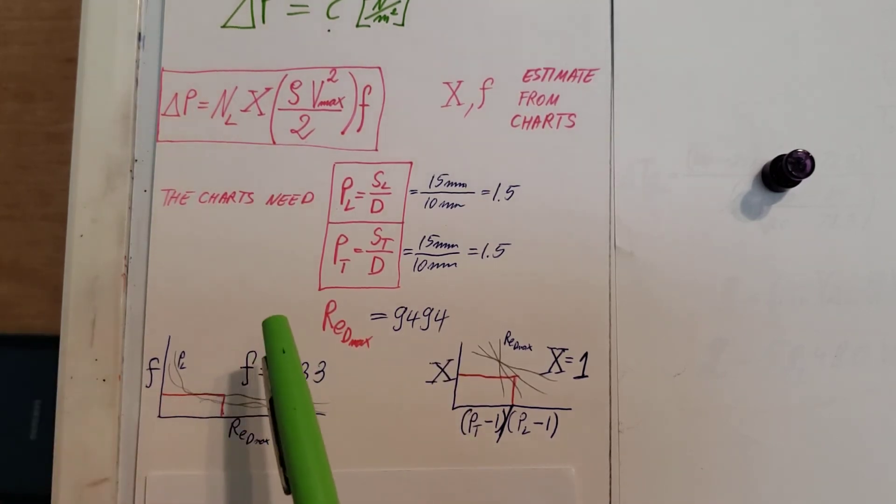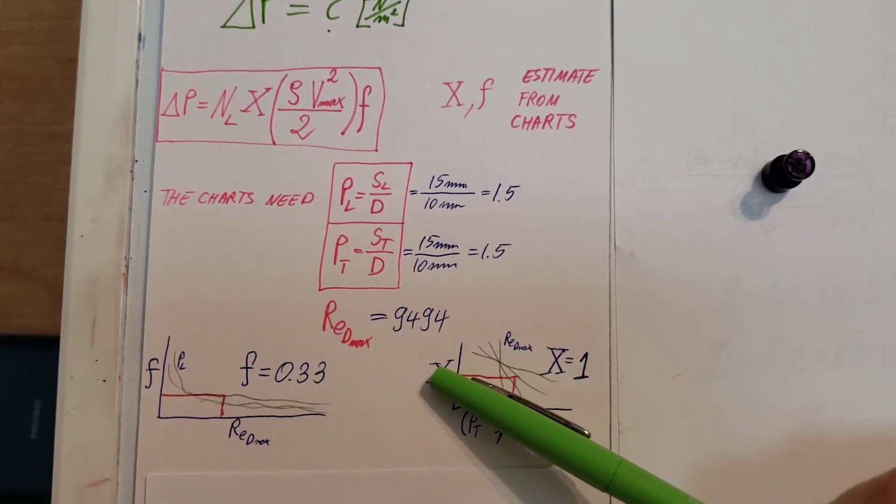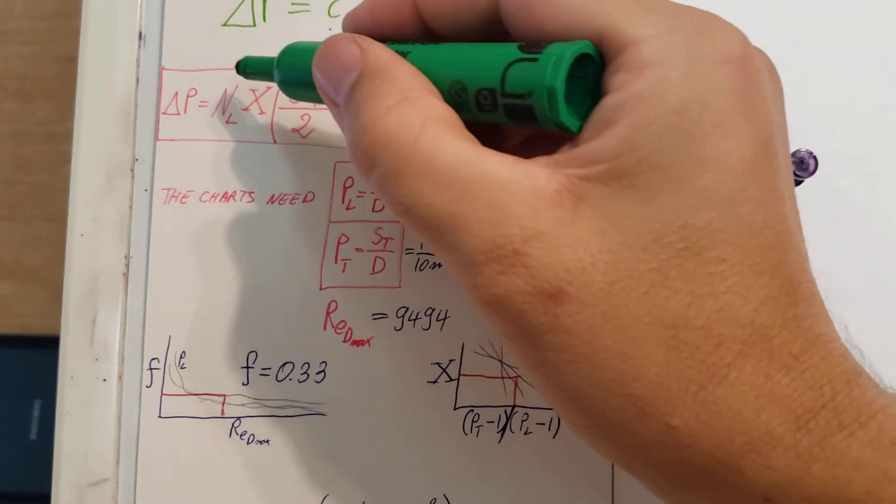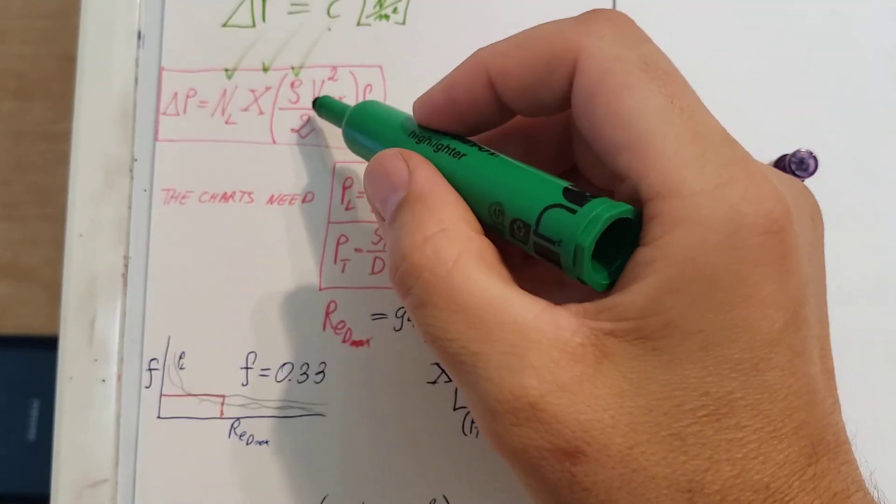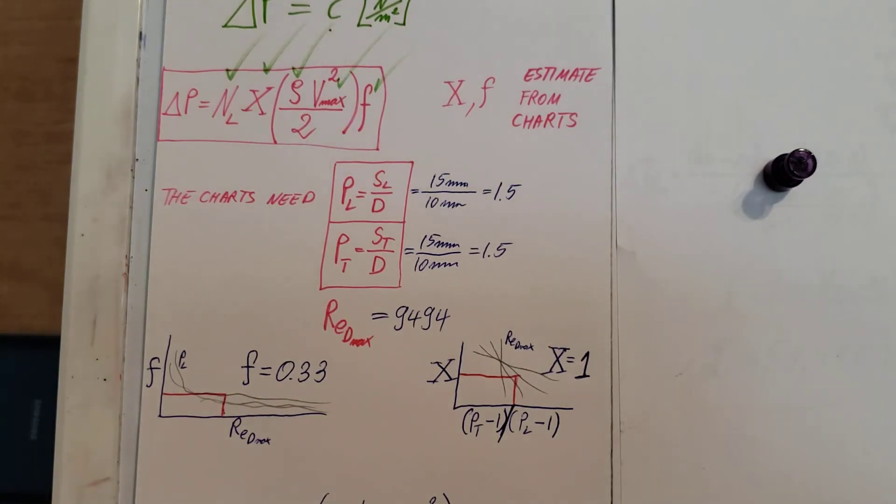Same thing goes for X, which is a correction factor. We're going to estimate from this chart. We're going to have to calculate this correlation out. Then we can use our Reynolds number max and find our X, which we can estimate to be roughly at 1. These are just rough sketches. Looking at our formula, NL we have, X we have now, we have our density, V max we calculated, 2, and the friction factor. We have everything, so let's go ahead and find our pressure difference.